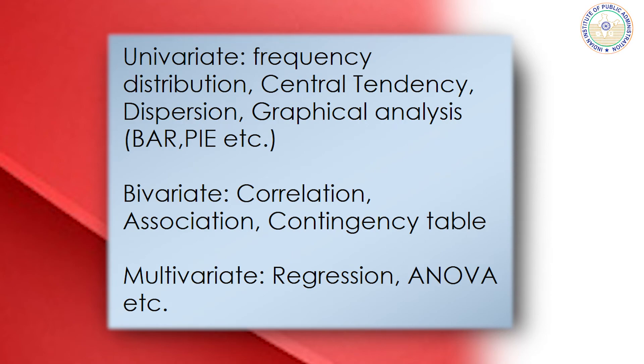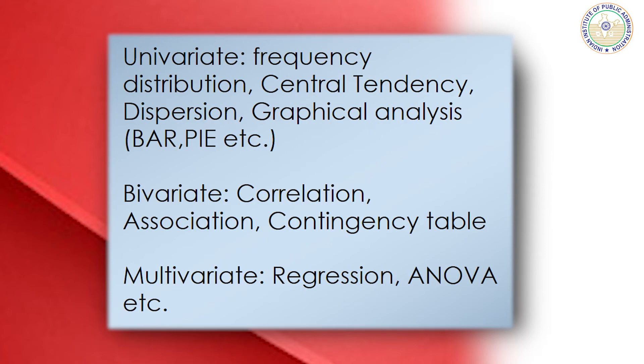Quantitative tools are categorized into three categories: univariate, bivariate, and multivariate methods. In univariate methods we study one variable at a time — tools include frequency distribution, mean, median, mode, histogram, pie chart, and bar chart. In bivariate analysis we study two variables and can use correlation analysis, association analysis, or chi-square. In multivariate methods we study more than two variables and can use regression, analysis of variance, and other multivariate techniques. These topics will be covered in detail in later chapters.